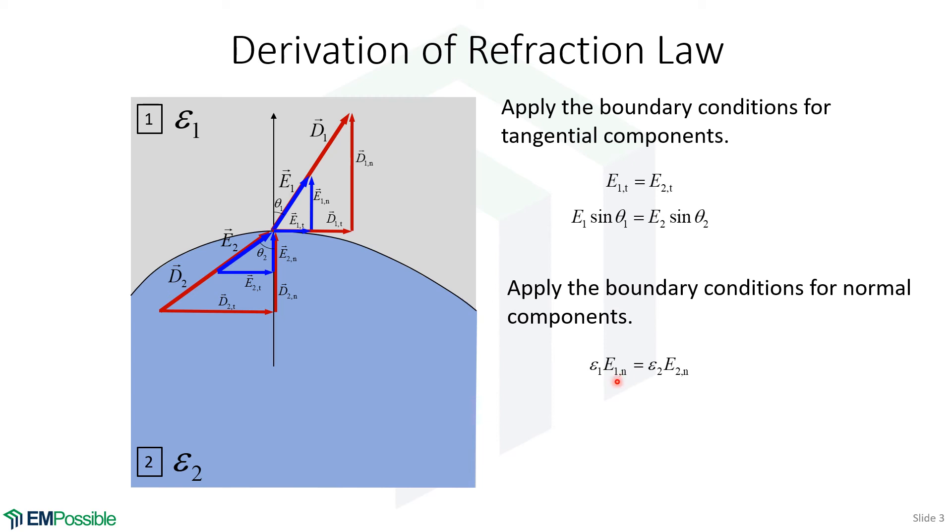So now we can write the E1 normal and E2 normal in terms of the angles. And I won't talk through this equation, but it's the same argument that we made up here.